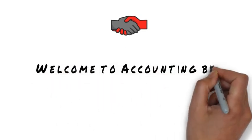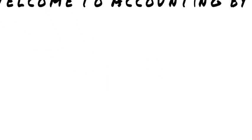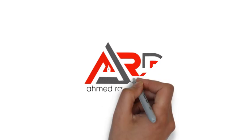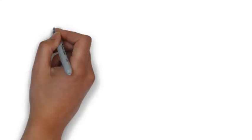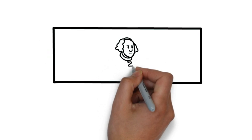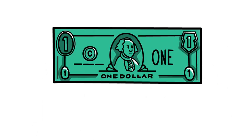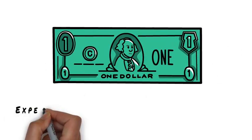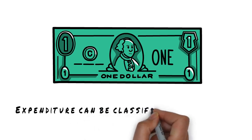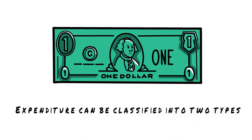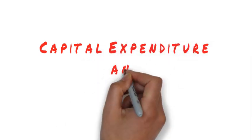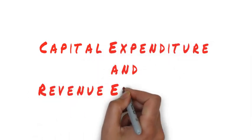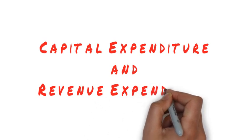Dear students, welcome to Accounting by ARD. Whenever there is any spending in the business, that spending is known as expenditure, and it can be classified into two broad categories: one is capital expenditure and another one is revenue expenditure.